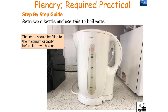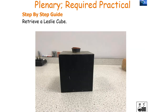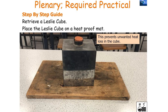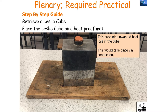Retrieve a kettle and use it to boil water. Then place the Leslie cube on a heat proof mat. Placing the Leslie cube on a heat proof mat prevents unwanted heat loss from the cube, because we want to measure energy loss due to radiation. Energy loss out of the bottom of the cube via conduction would make the test inaccurate.